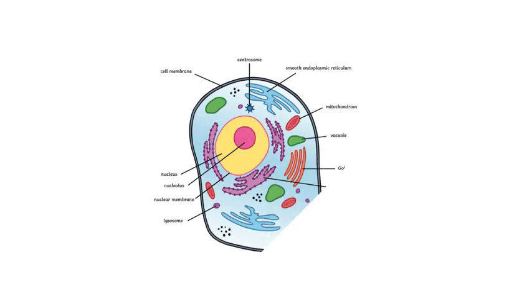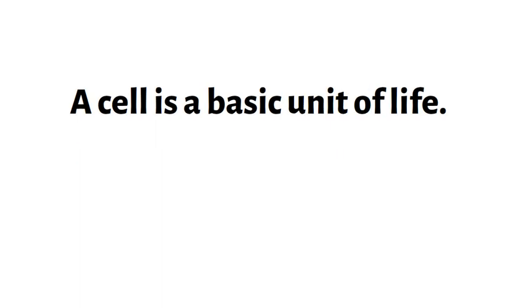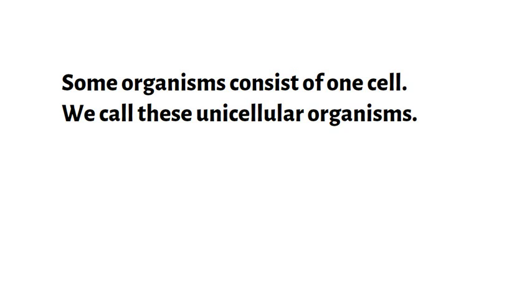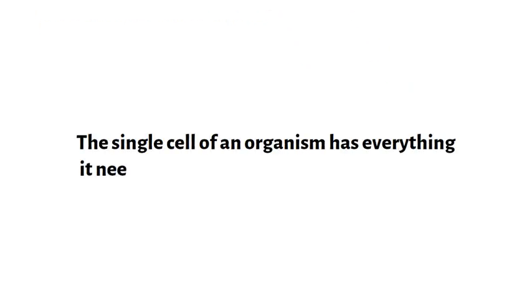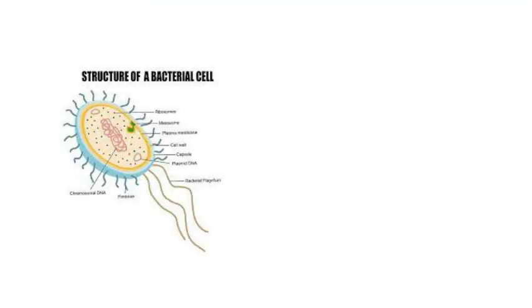Living organisms are made up of cells. A cell is a basic unit of life. Some organisms consist of one cell — we call these unicellular organisms. The single cell of an organism has everything it needs to carry out all the life processes. Examples of unicellular organisms include bacteria and amoebas.